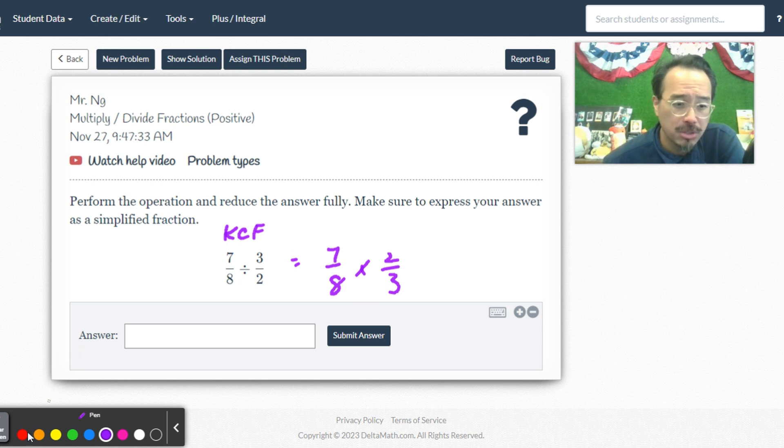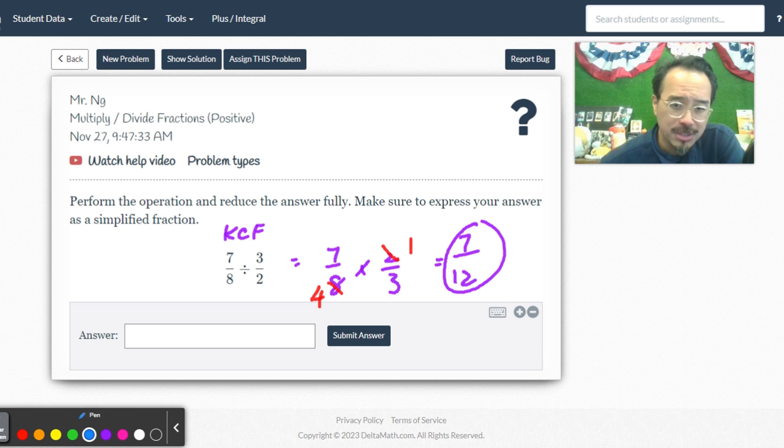Cross cancel if necessary. Yes, it's necessary. And then 7 times 1 is 7, 4 times 3 is 12. Notice, I don't cross cancel until this is a multiplication problem. You notice how I didn't cross cancel around here? It's because cross canceling only works when you're multiplying. Please remember that.